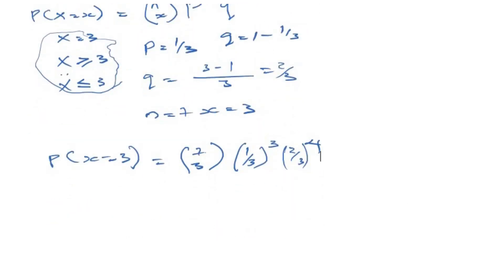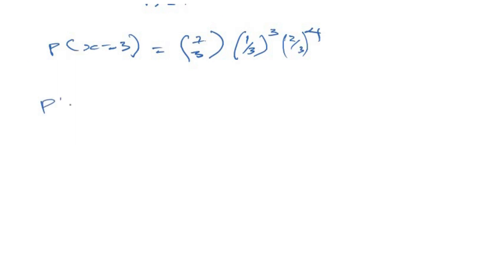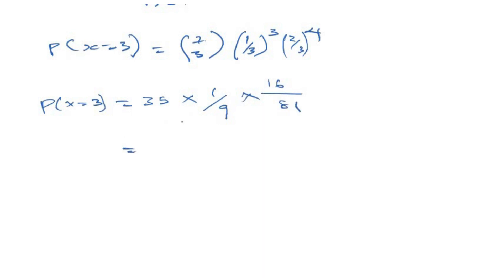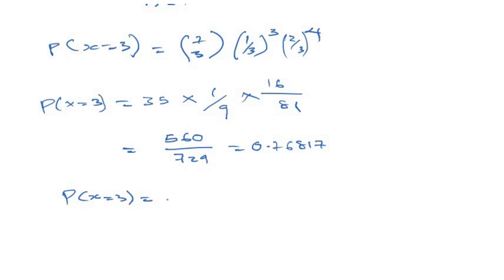Simplifying: p of X equals three. If you press seven combination three on your calculator, you get 35. Multiplied by one over three raised to the power of three, which is one over 27. Multiplied by two over three raised to the power of four — two to the power of four is 16, and three to the power of four is 81. When you multiply the numerator together, you get 560 over 729, which equals approximately 0.7682. This is the probability of him hitting the target exactly three times.